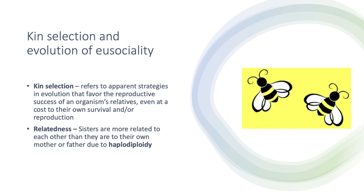The key to kin selection and eusociality is that sisters are more related to each other than they are to their own mother or father. This is due to the haplodiploidy sex determination system of all Hymenoptera — ants, bees, and wasps. When a queen fertilizes an egg, the diploid result becomes a female — either a worker or a queen. When she doesn't fertilize an egg, the haploid result becomes a drone. The queen controls this through her spermatheca, which stores sperm and allows her to choose.